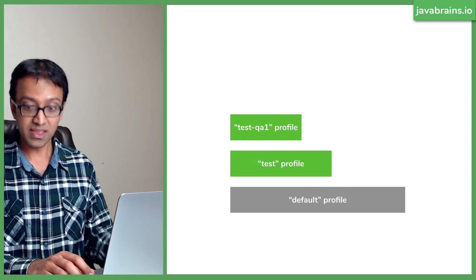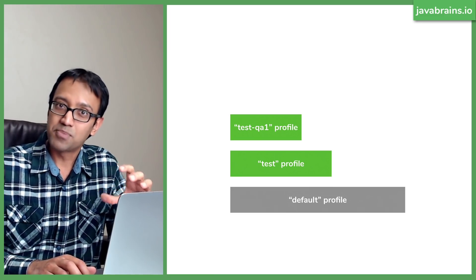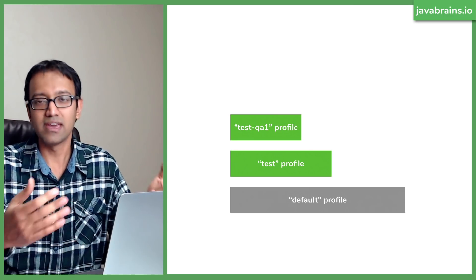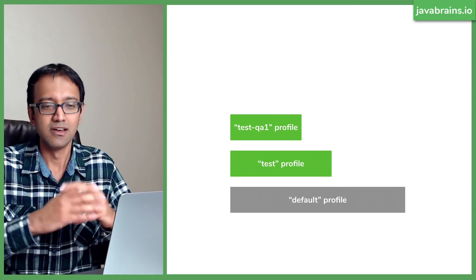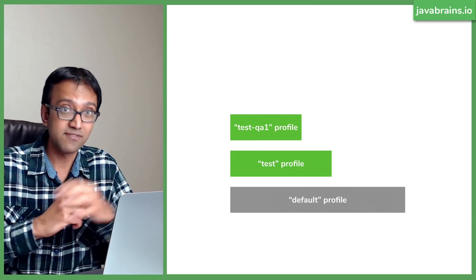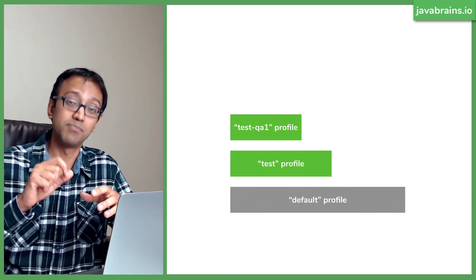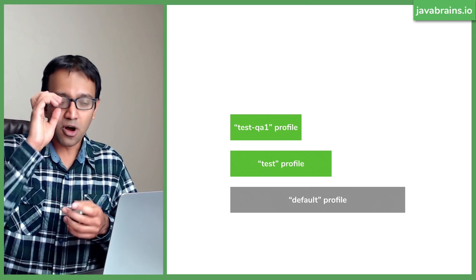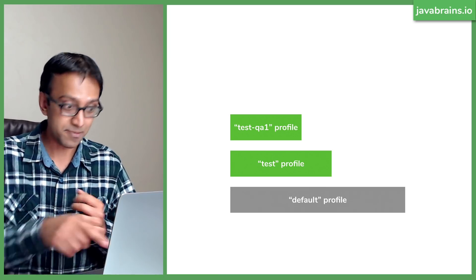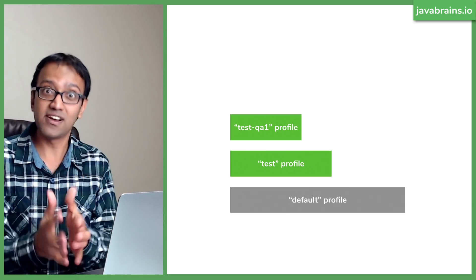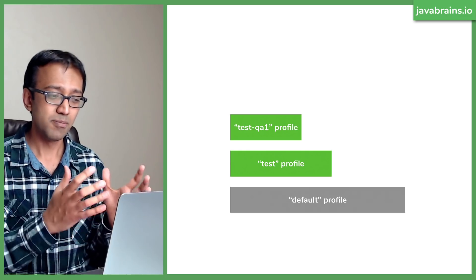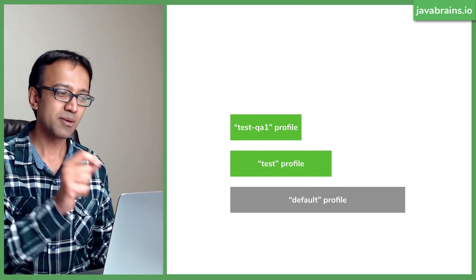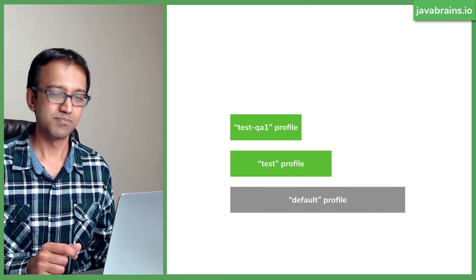Now how is this helpful? You can create different property files for different environments — dev, QA, and prod. In dev, your connection string points to your dev database; in QA properties, it points to your QA database; and in the prod property file, it points to prod. For all the common things which don't change from environment to environment, you can put those in the default profile. You don't have to copy all the properties across multiple environment property files.